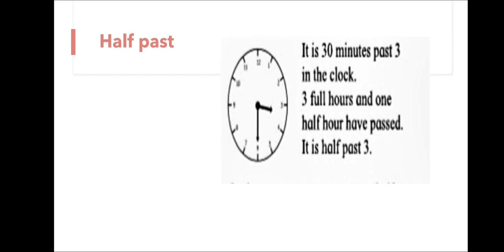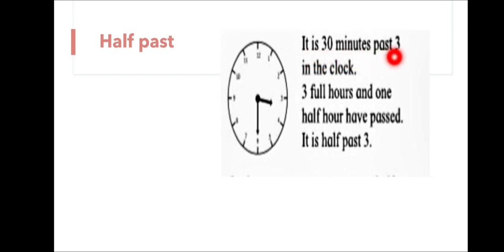What is half past? It is 30 minutes past 3. In the clock, three full hours and one half hour have passed. It is half past 3. If the minute hand stands on 6, it means half past.